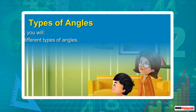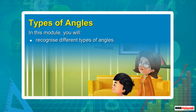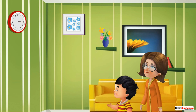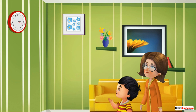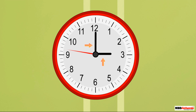Types of Angles. In this module, you will recognize different types of angles. Sid is looking at a clock. Two hands are at different positions at different points of time as they move along the dial. The two hands represent two rays meeting at a point.